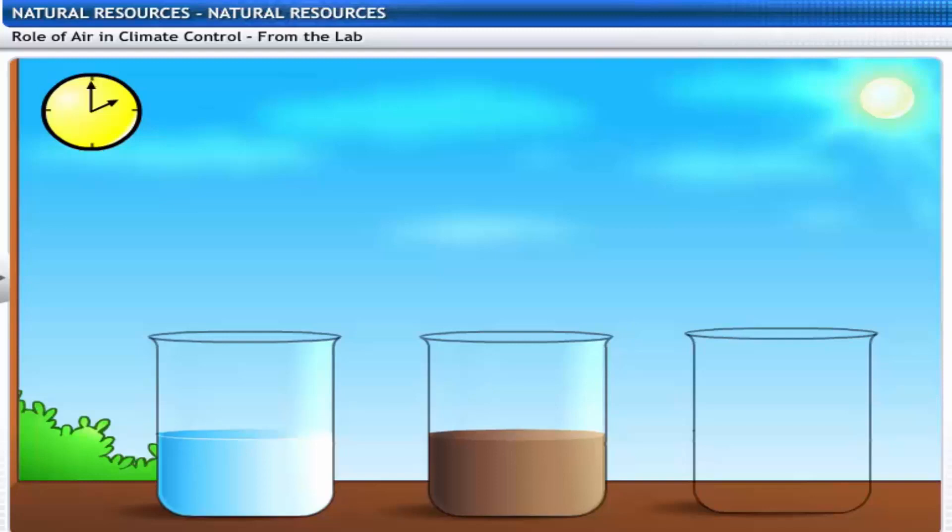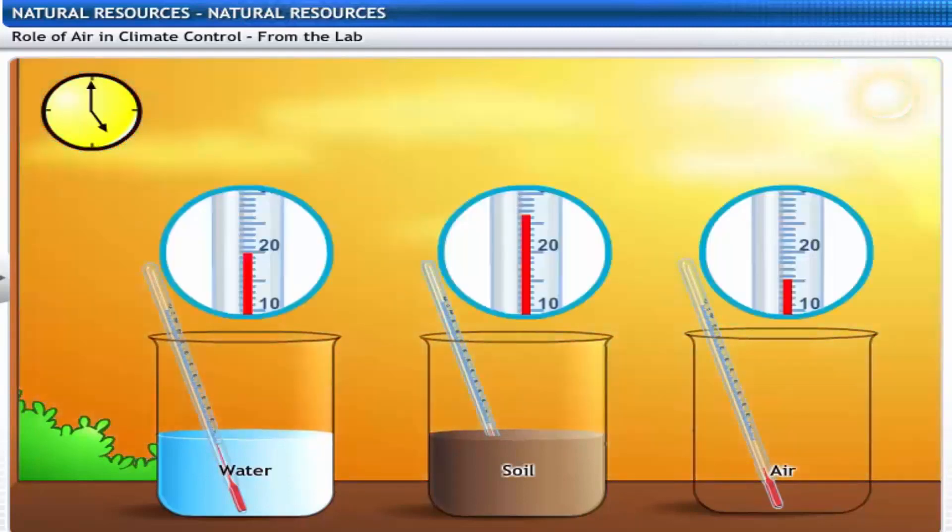Here are three beakers. The first is filled with water. The second with soil. And the third is left empty. A thermometer is placed in each of the beakers. The beakers are placed in sunlight for three hours and the thermometer readings are taken.